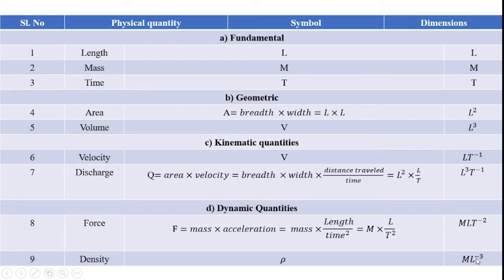From this I get L cubed. So M divided by L cubed can be expressed as M into L power minus 3. Similarly, we can convert all physical quantities — geometric, kinematic, and dynamic — into dimensional form.